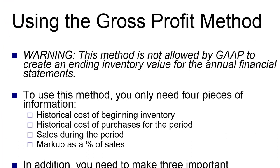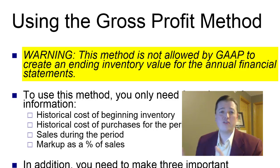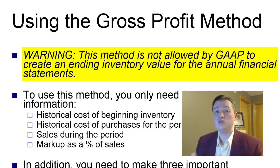Let's start with the gross profit method. Before we jump in, here's an important warning: you may not use this ending inventory number from the gross profit method in your annual financial statements — FASB will not allow it. You can use it for interim statements — monthly, quarterly, etc. — and for insurance reports. It's the fast method so a lot of analysts and auditors use it as well. Even though you can't use it for annual numbers, you can still use it a lot.